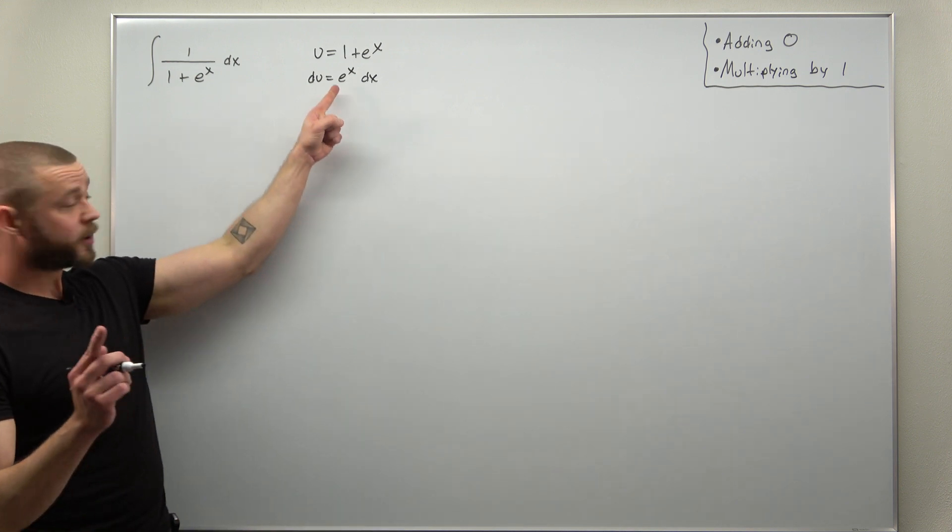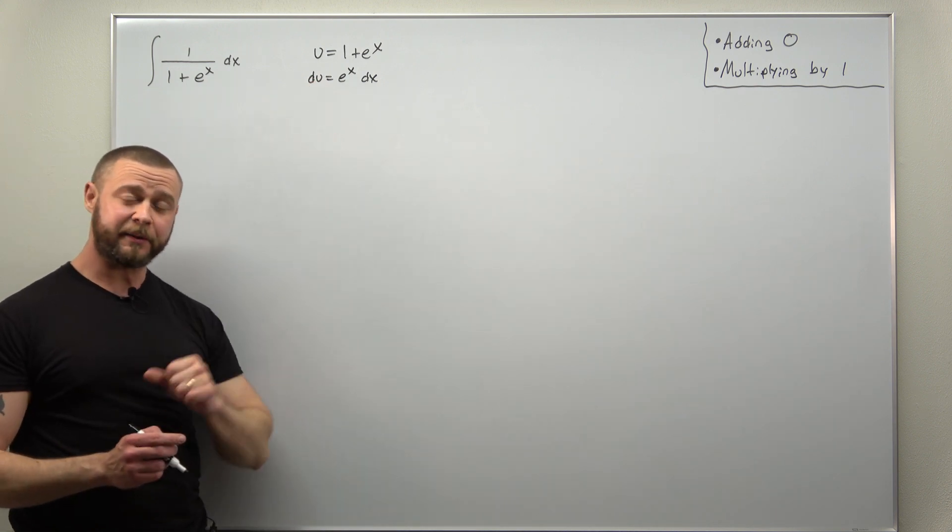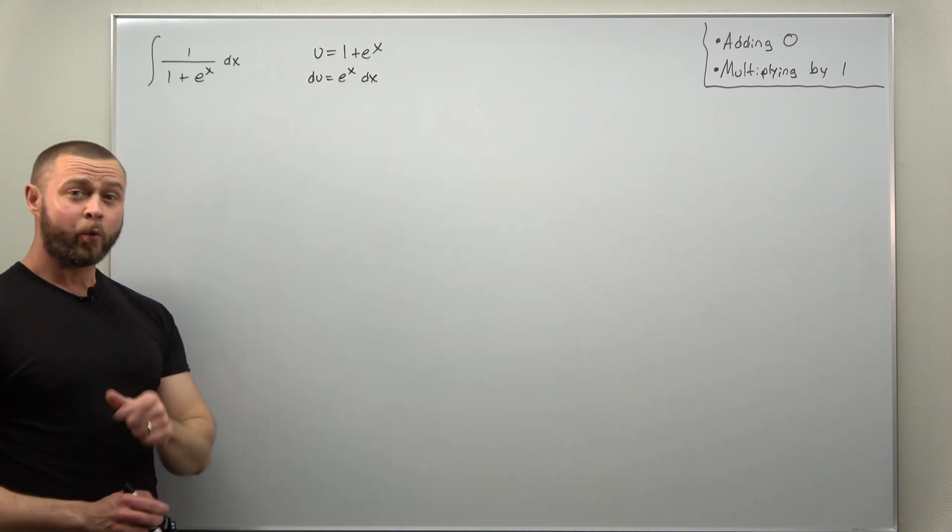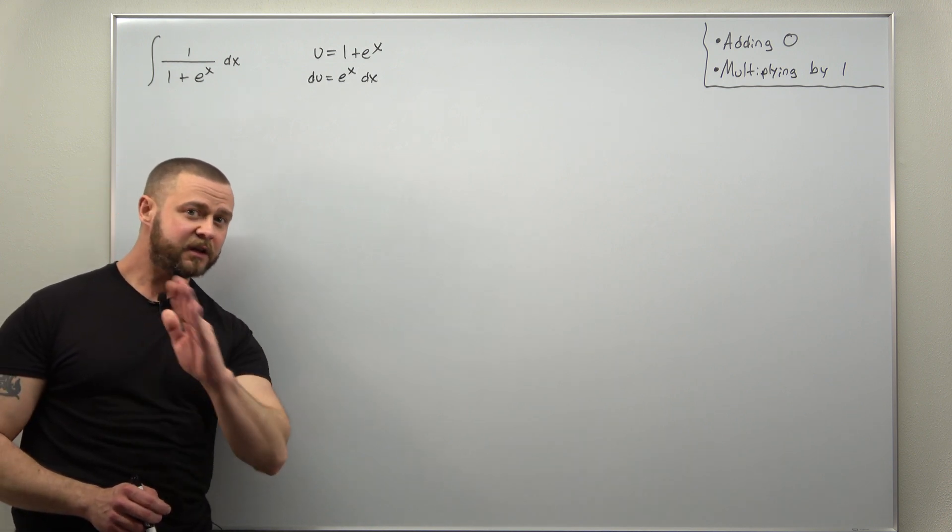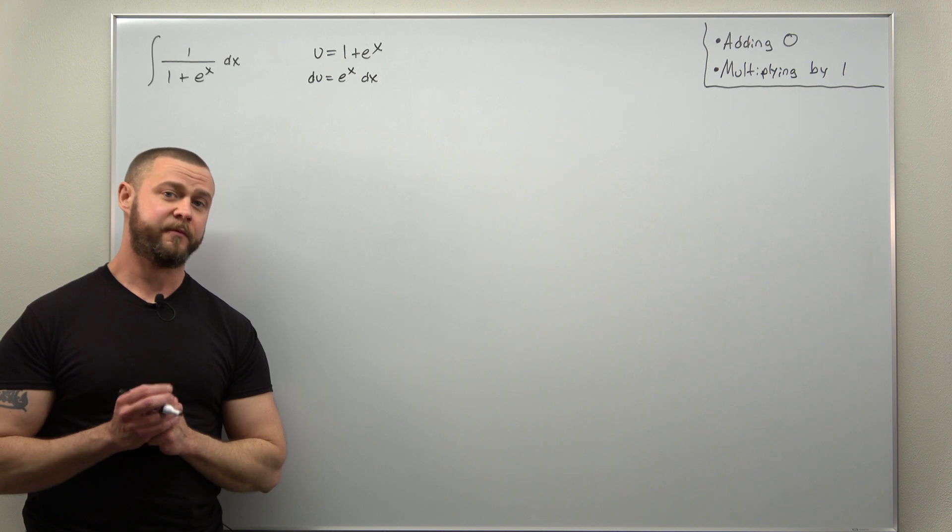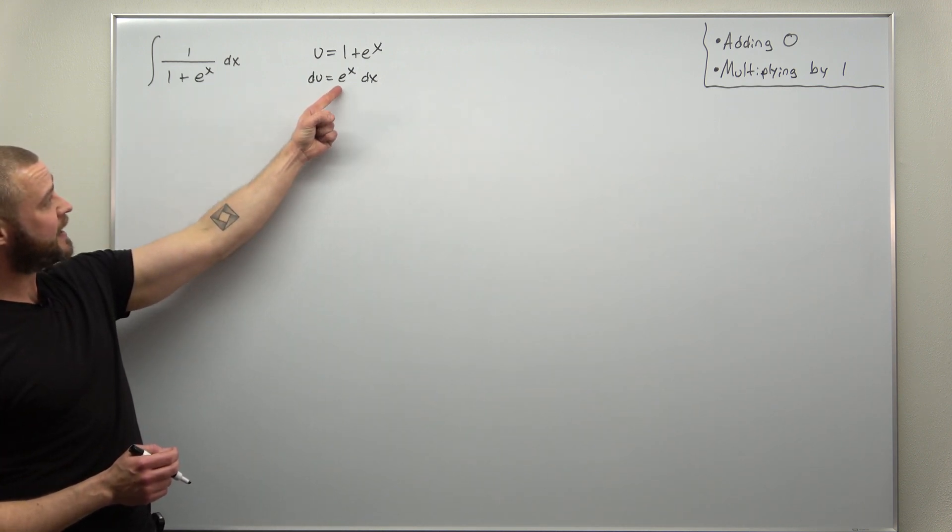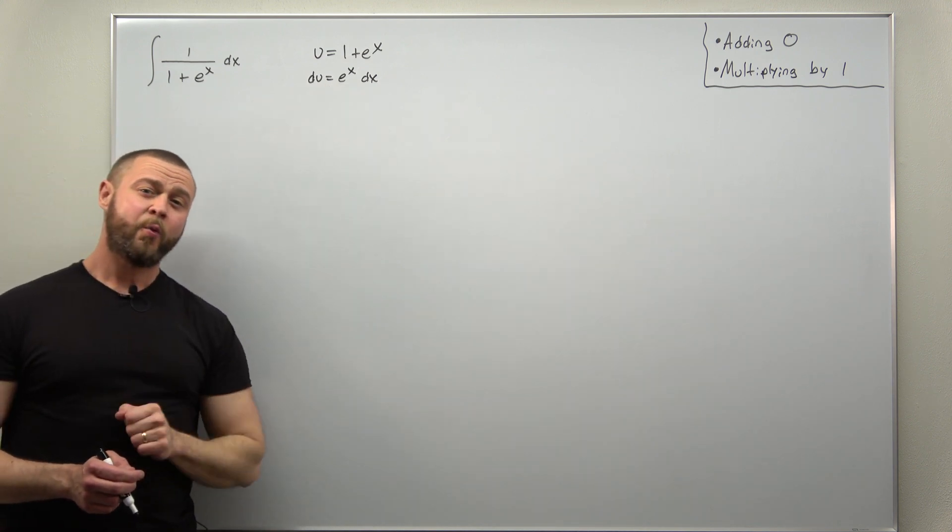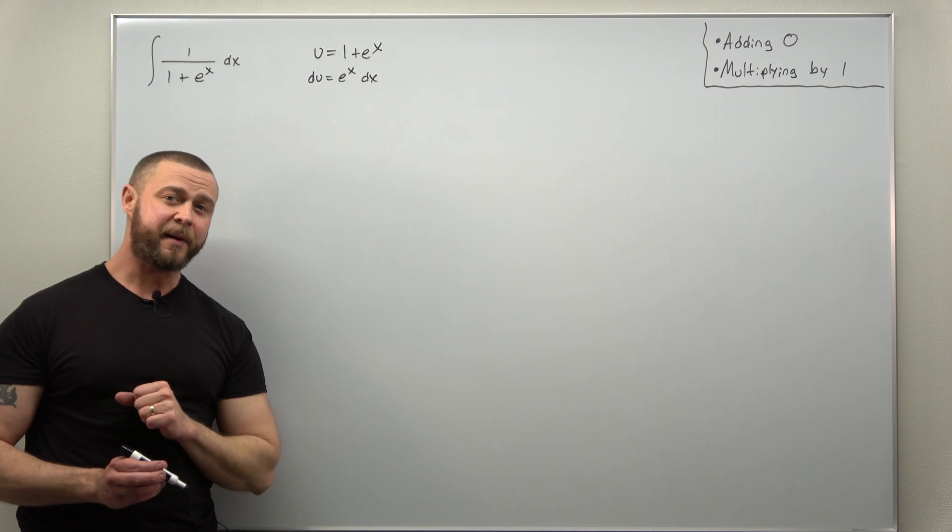Now again, we're going to take guidance from this substitution or trying to get this substitution to work. We're going to multiply by one, and the art is choosing one for integrals here. And what we're going to choose, looking at that factor of e to the x in the du, we're going to choose one as e to the x divided by itself.